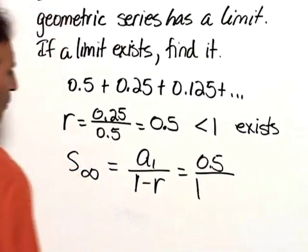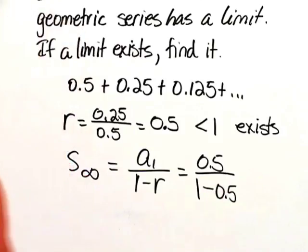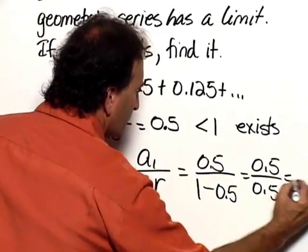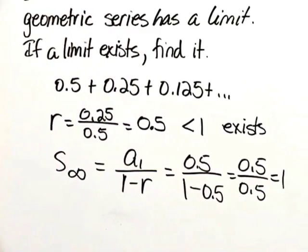And then 1 minus R, R happens to also be 0.5. Well that's equal to 0.5 divided by 0.5, which is equal to 1. So the limit for this series is 1.